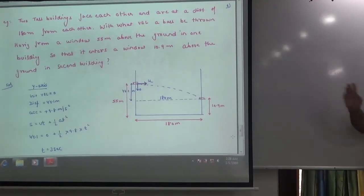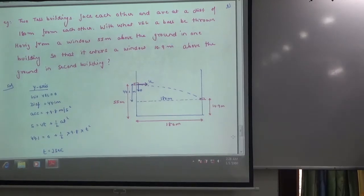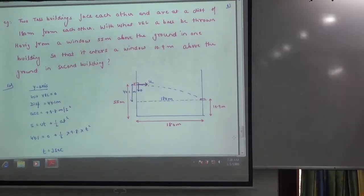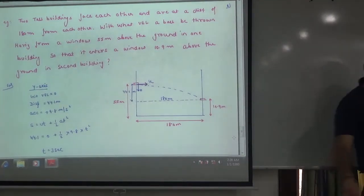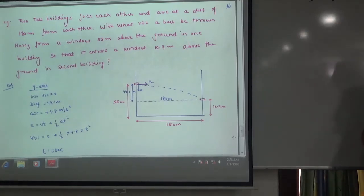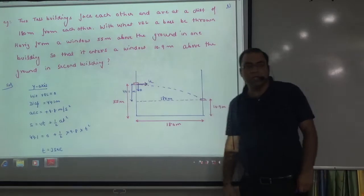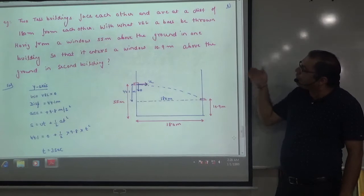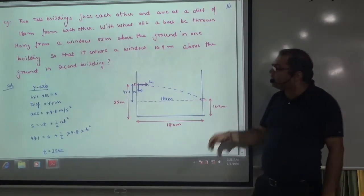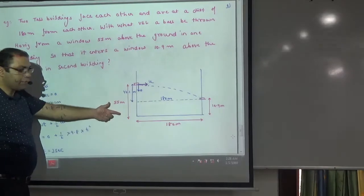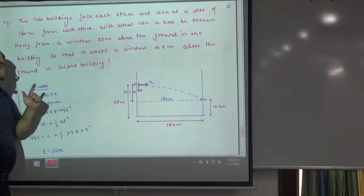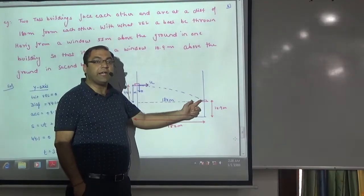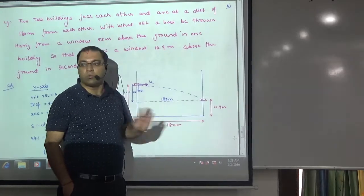Two tall buildings face each other and are at a distance of 180 meters from each other. So there are two tall buildings, the distance between them is 180 meters. And with what velocity must a ball be thrown horizontally from a window 55 meters above the ground? 55 meters above the ground, a window, a ball. And where should it go? It should go to this window, which is at a height of 10.9 meters from the ground.